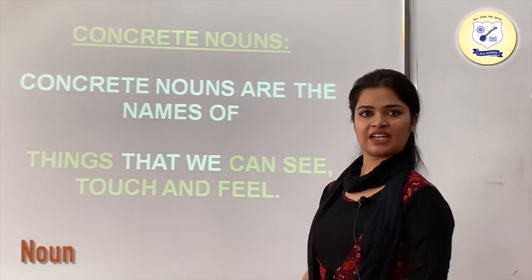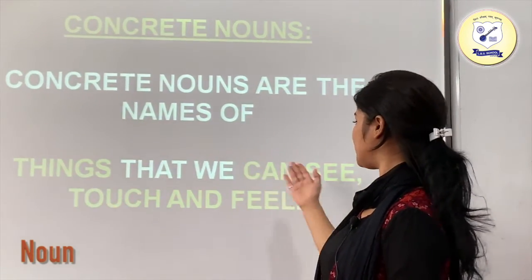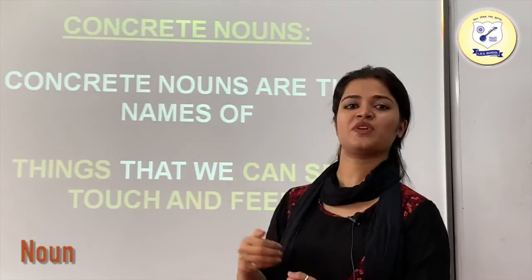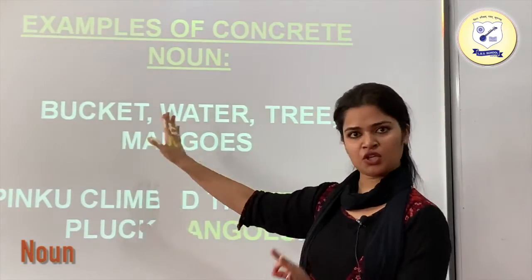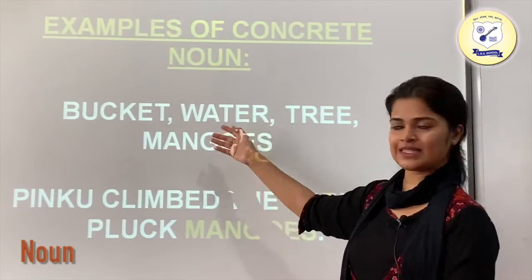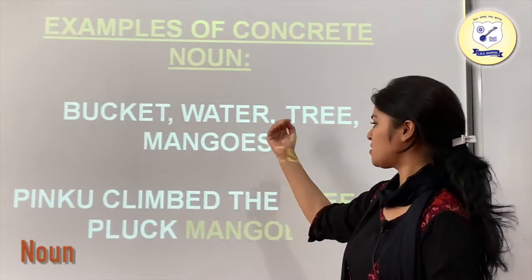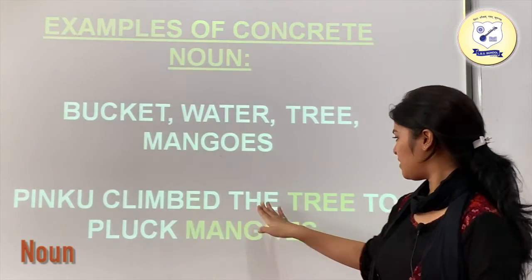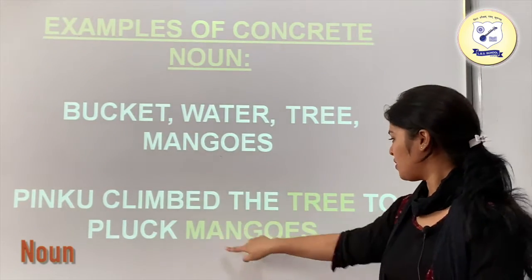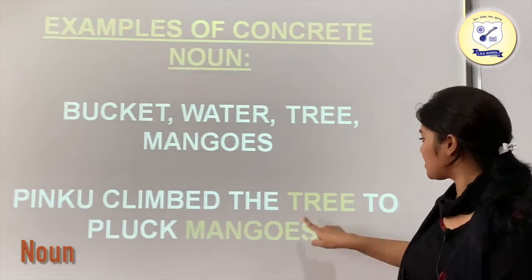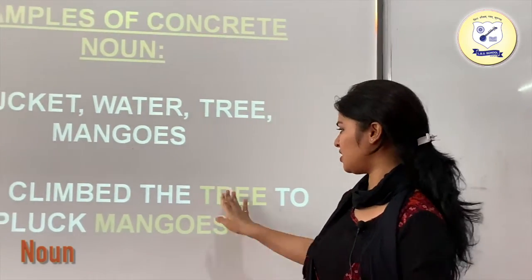Now we have concrete nouns. Concrete nouns are names of things that we can see, touch and feel. Examples: bucket — you can touch it; water — we can see it; tree — we can touch and see it; mangoes. For example, Pinku climbed the tree to pluck mangoes. Tree and mangoes are highlighted as concrete nouns since we can see and touch these things.